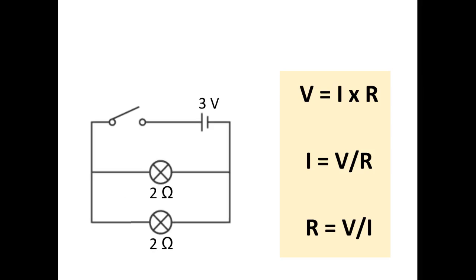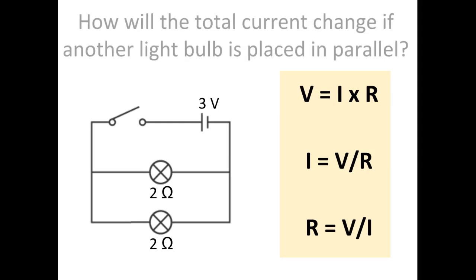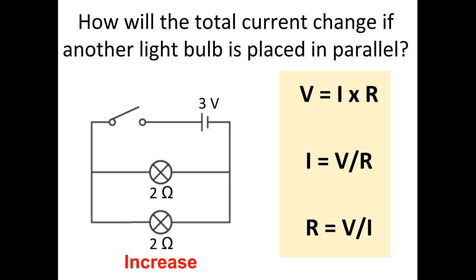Now we have placed another light bulb in parallel to our first light bulb. Each light bulb has 2 ohms resistance. How will the total current, all the current that goes through the circuit, change if we have that other parallel bulb? It will increase.